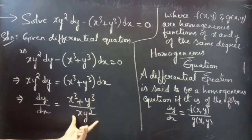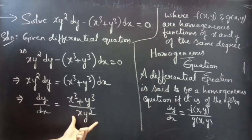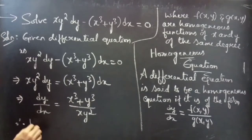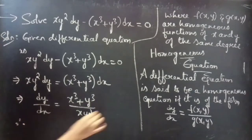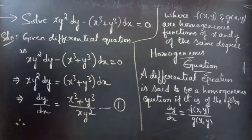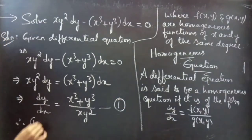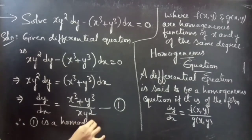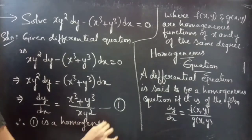The numerator and denominator are homogeneous functions of the same degree. Therefore, this equation — call it equation 1 — is a homogeneous differential equation.